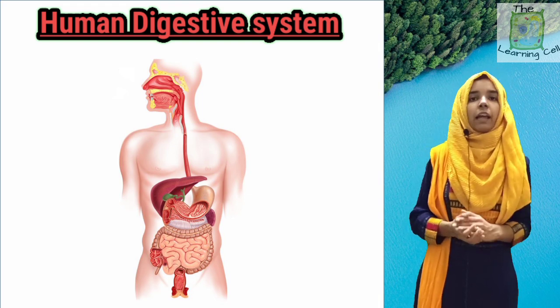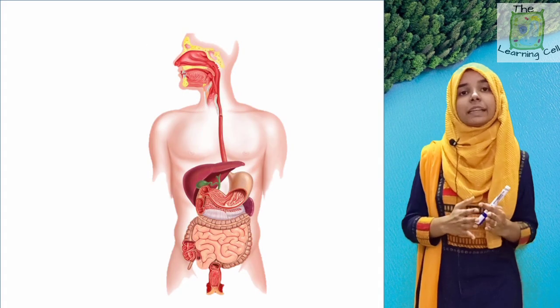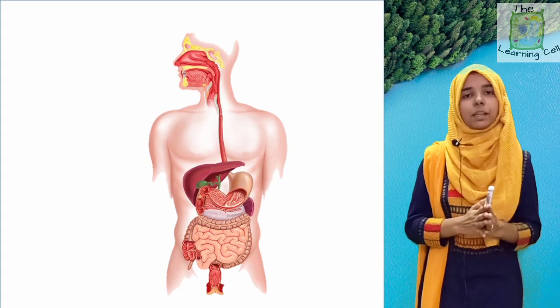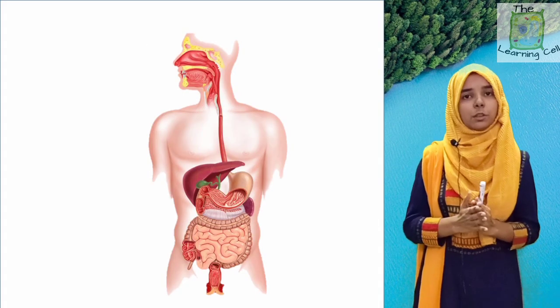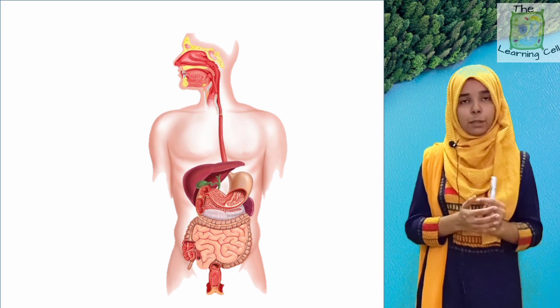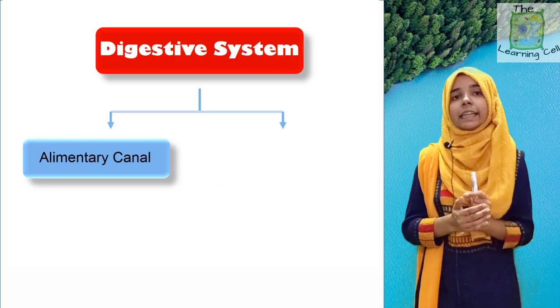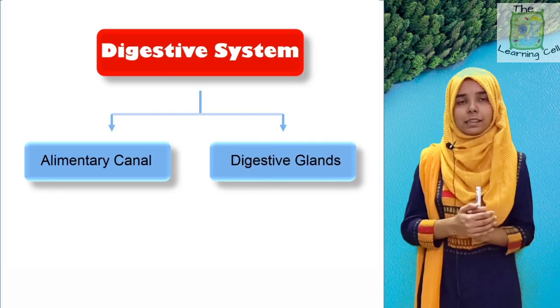Welcome to my channel The Learning Sin. Now there are two main parts of the human digestive system: first is our alimentary canal, and second is digestive glands.